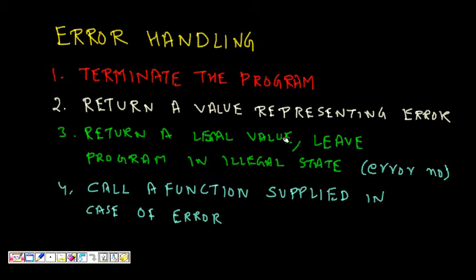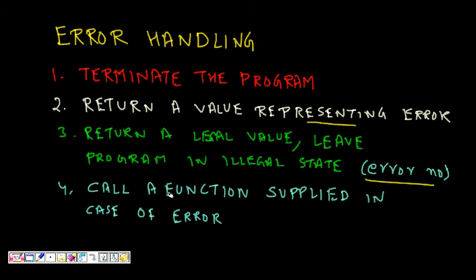The second approach is to return a value representing an error — for example, return 1 on success and 0 on failure. A third approach is to return a legal value but leave the program in an illegal state, like error numbers in C, where the standard library sets errno to a specific value on failure. But if you don't check that error number, you'll never know an error occurred.